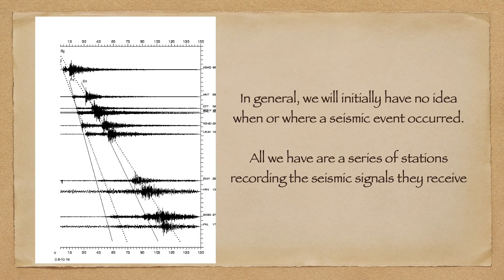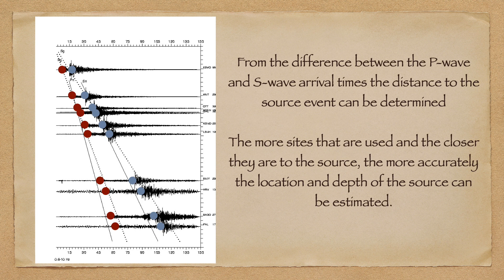The fact that pressure waves and shear waves have different velocities is actually very useful. Normally, when seismic stations receive a signal, they have no idea what event caused it, how far away it was, or when it happened, or how big it was. But similar to the P-wave arrivals, we can identify when the P-waves and when the S-waves arrived at the receiver, and we can calculate the difference between them. From that difference, we can estimate the distance between the receiver and the seismic source.